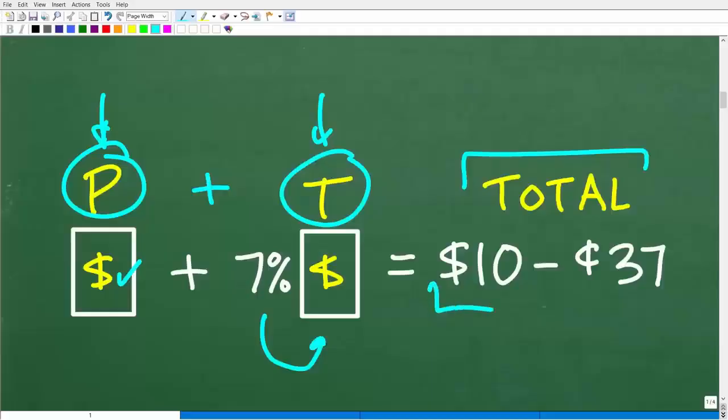Now, what is our total? Well, if you gave the cashier $10 and we got back 37 cents in change, the difference here is the total cost. So this is just the basic kind of representation of the problem.